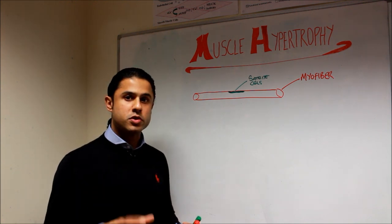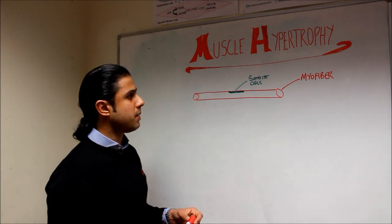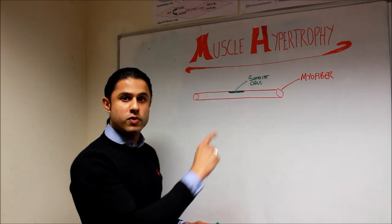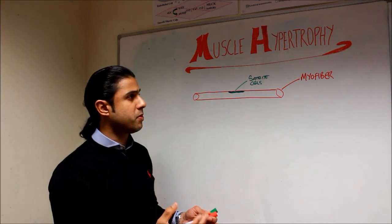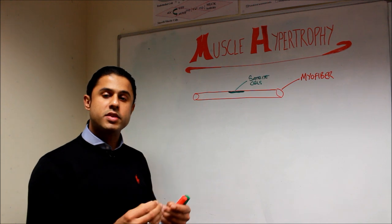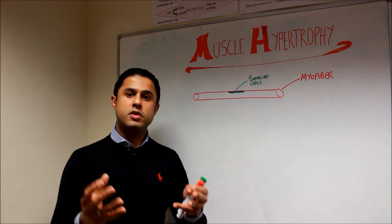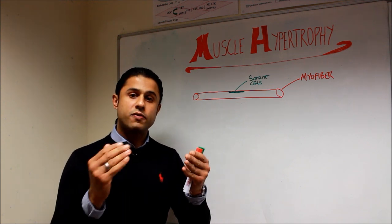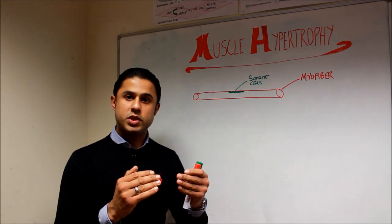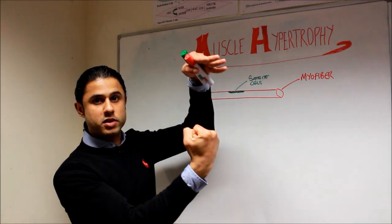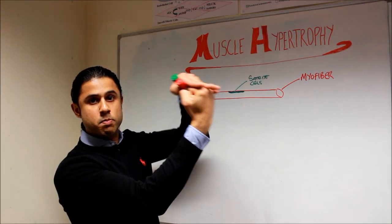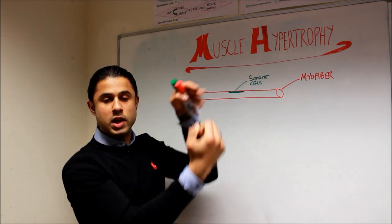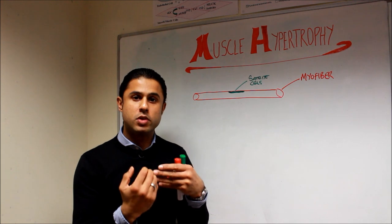Before we begin it's important to define a couple of concepts. Every single muscle fiber in our body consists of individual muscle fiber strands known as myofibers or myofibrils. They contain sarcomeres which consist of actin, myosin and a protein titin. It's the sliding filament mechanism which causes the myosin heads to bind to the actin binding site and move the myofibrils along to cause shortening of the muscle and contraction.